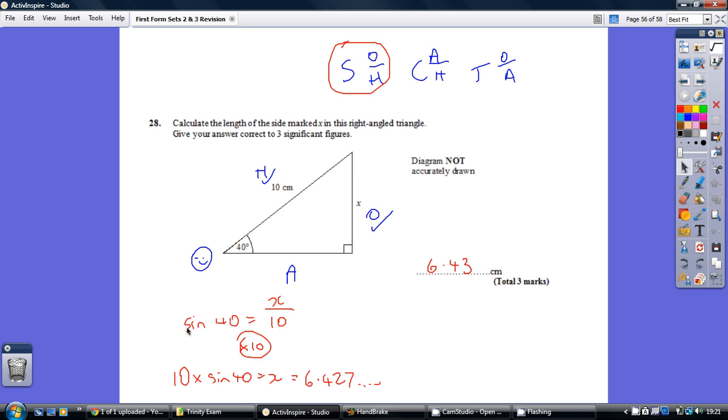So sin, what comes after sin? It's always the angle. So sin 40 equals our opposite side, which is X, divided by our hypotenuse, which is 10.